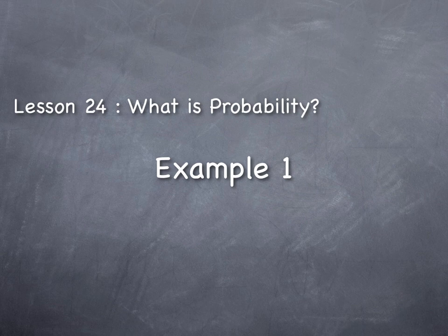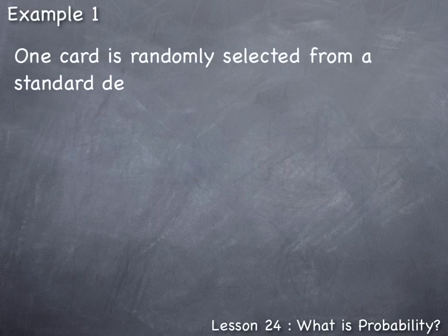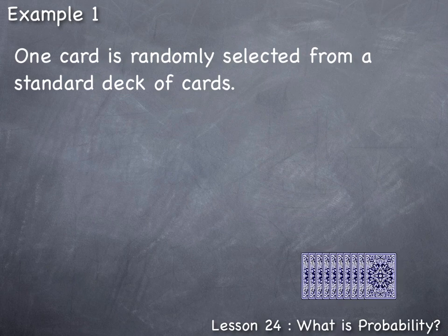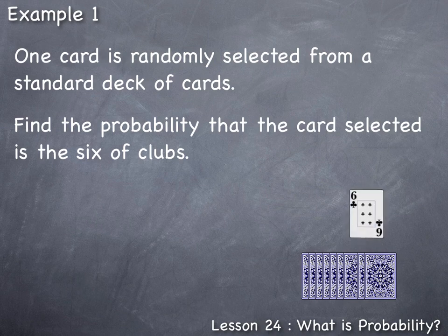Lesson 24: What is probability? Example one: one card is randomly selected from a standard deck of cards. Find the probability that the card selected is the six of clubs. In order to find this probability, we need to use the relative frequency or proportion approach.